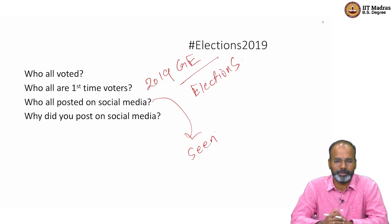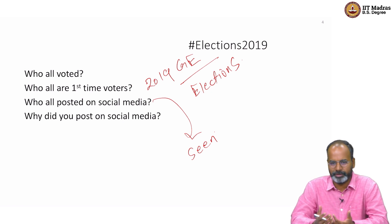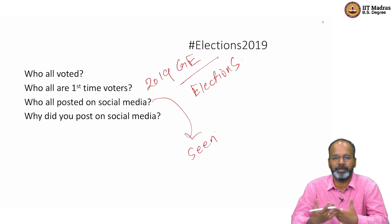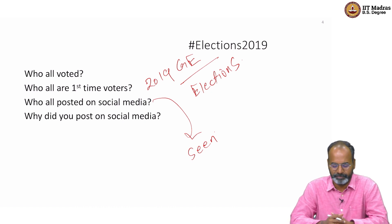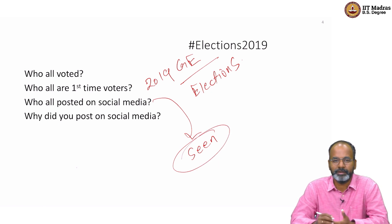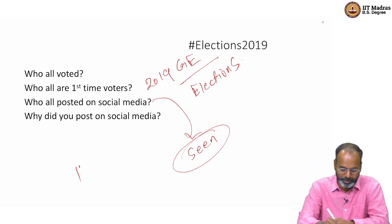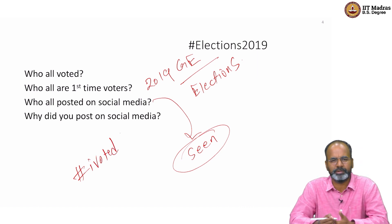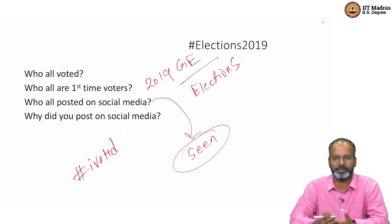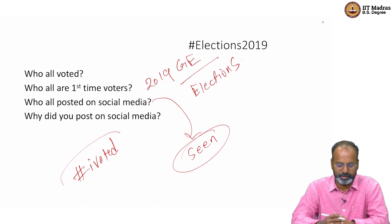Why did we post on social? We want to share that we are casting our vote, doing our duty as a citizen of the country, and saying that I voted is also being part of the activity and buzz during elections. Even if you have not voted, you would have seen others do such posts. Go take a look at hashtag 'I voted' — this is a hashtag used across the world whenever elections happen.